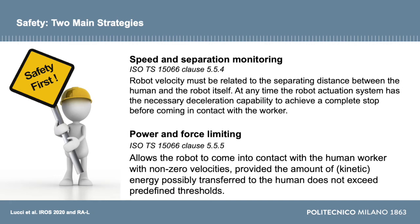For speed and separation monitoring, we need to guarantee that the robot's velocity is related to the distance between the robot itself and the human worker, so that at any time the robot's actuation system — the controller — is able to reduce the speed, such that in case of possible contact it happens at zero speed, meaning the robot is capable at every time to come to a complete stop before coming into contact with the human.